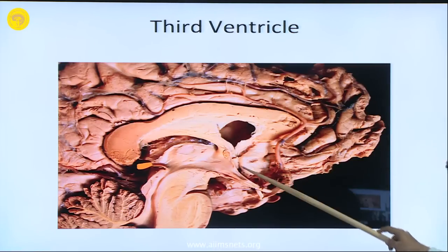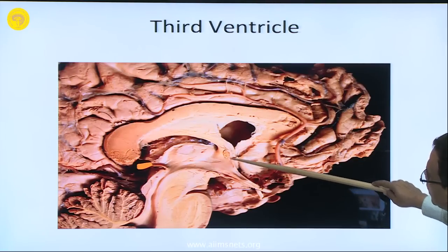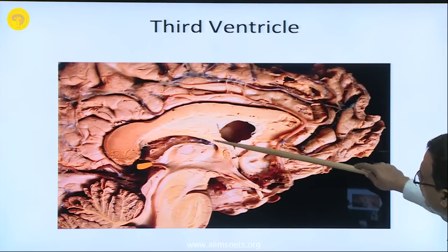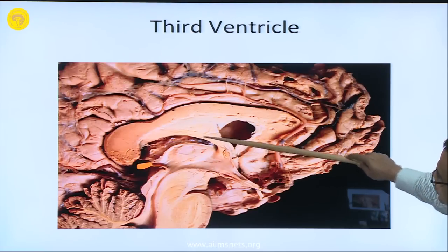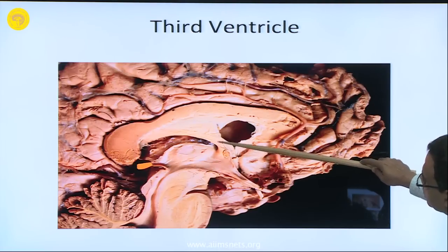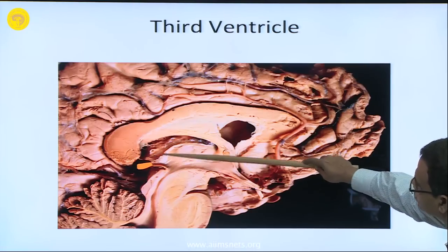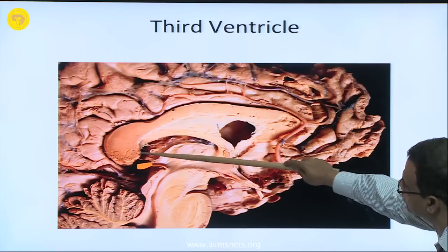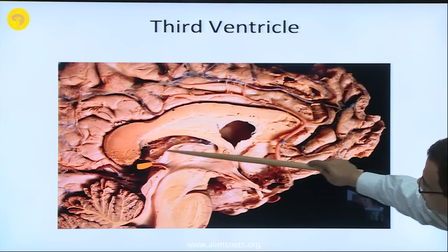Here is the anterior wall of the lateral ventricle — the lamina terminalis — you can see the anterior commissure and the column of the fornix. The two columns of the fornix form the anterior wall of the third ventricle. This is the roof of the third ventricle, which is formed by the choroidal fissure, which contains the tela choroidea.